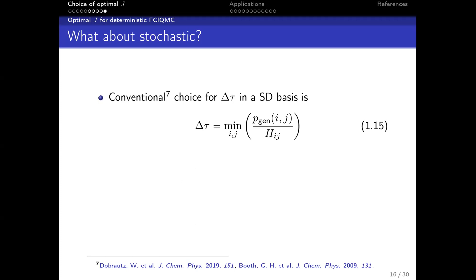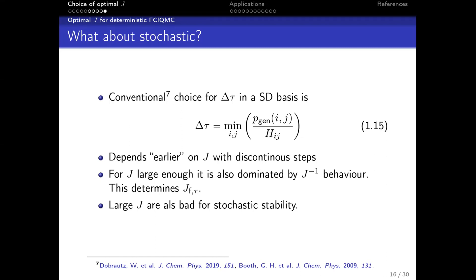That was all deterministic. In FCIQMC we actually do Monte Carlo QMC. There you have different choices for the time step. The conventional choice depends on the expectation generator and might create discontinuous steps where your time step starts to depend early on J. But there will be a J large enough where you start to be dominated smoothly by a J^(-1) behavior. I also want to mention that large J values are also bad for stochastic stability, so sometimes you don't want to go to too high J.